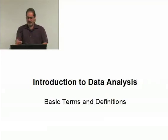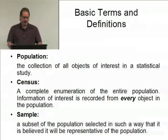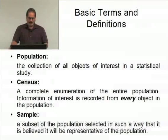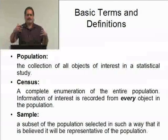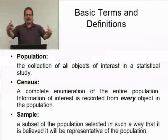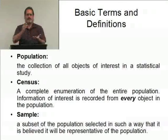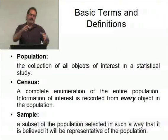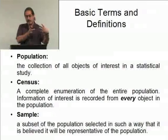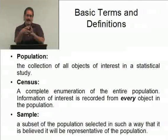Let's take a look at some basic terms and definitions. First, let's start with the concept of population. The population is a collection of all objects of interest in a statistical study. For example, suppose we're looking at student-athletes — specifically freshman volleyball players. I've just defined my population. Now, are we talking about this nationwide, within a particular state, a county, a school district, or a particular campus?